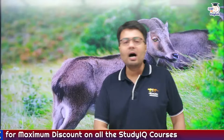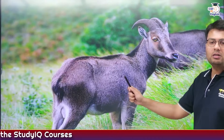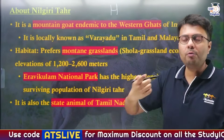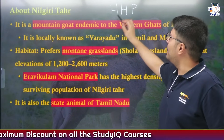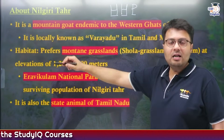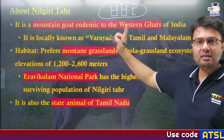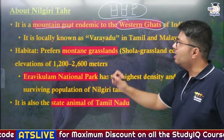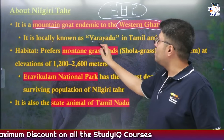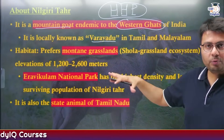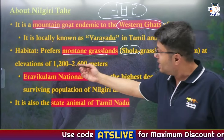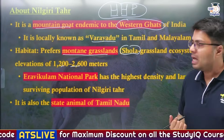Nilgiri Tahr is essentially a kind of mountain goat. It is endemic to the Western Ghats region of India and is known as 'Varayadu' in Tamil and Malayalam. It prefers mountain grasslands, particularly the Shola grasslands ecosystem, at higher elevations of 1,200 to 2,600 meters above sea level.